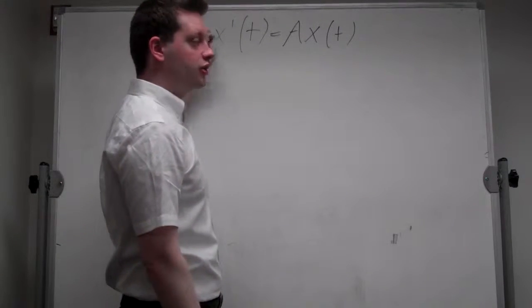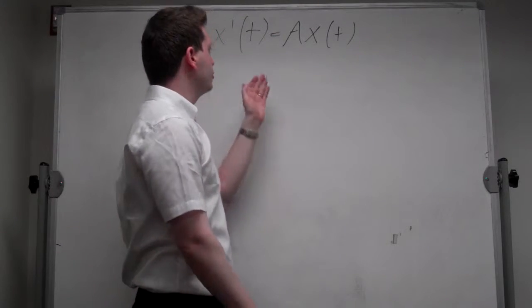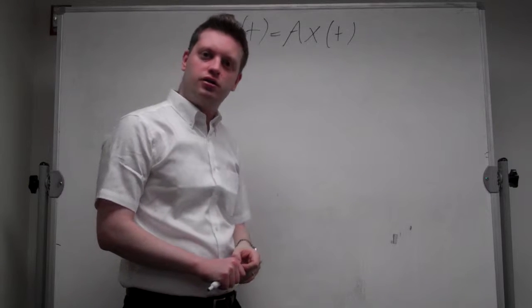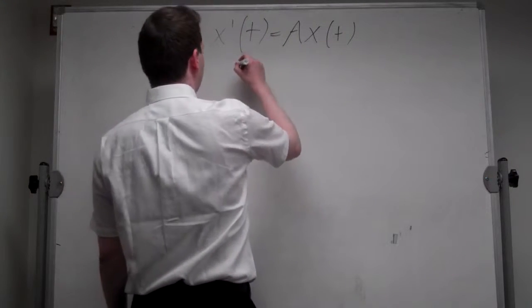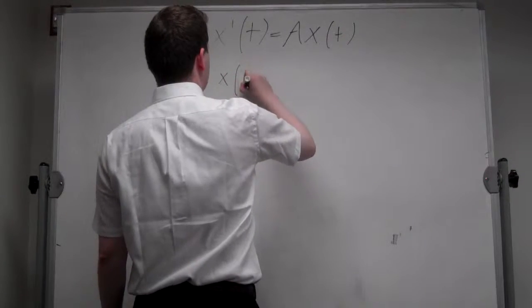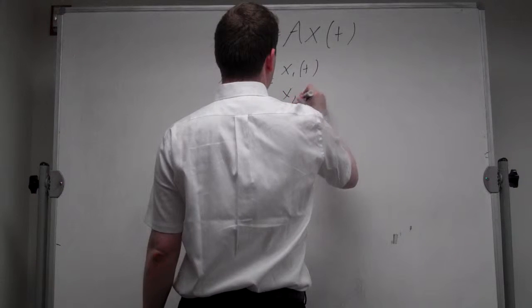For a two equations system, these are two by one vectors and a two by two matrix. The solution for this differential equation is simply x t which is equal to x1 t, x2 t.